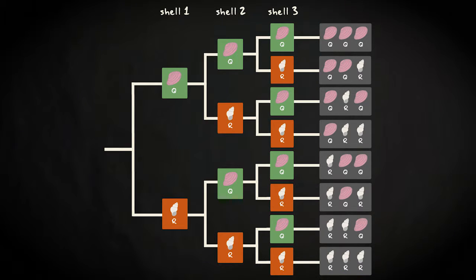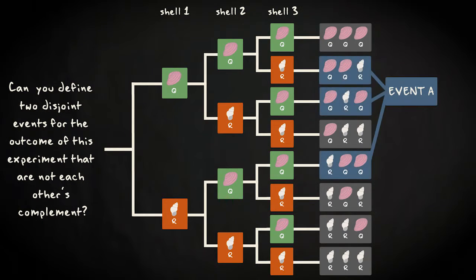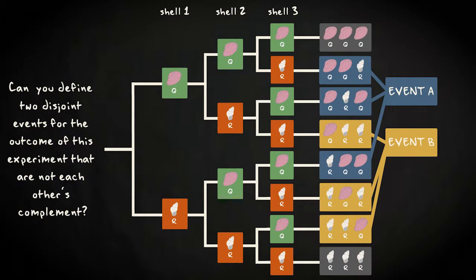Now that you have visualized the experiment in a tree diagram, can you define two disjoint events for the outcome of this experiment that are not each other's complement? An example of this would be event A, that you would only have picked up one R shell in total, and event B, that you would have picked up two R shells in total. These are disjoint, but not each other's complement, because there is some part of the sample space that belongs to neither of the two events.